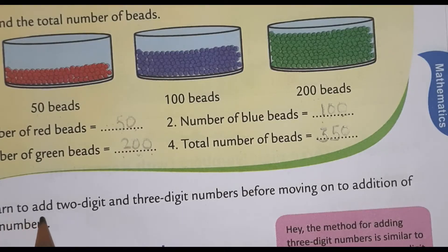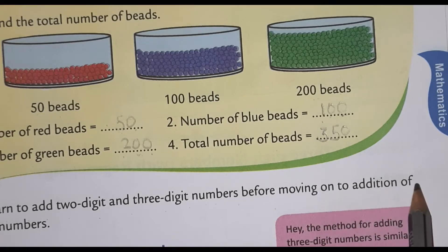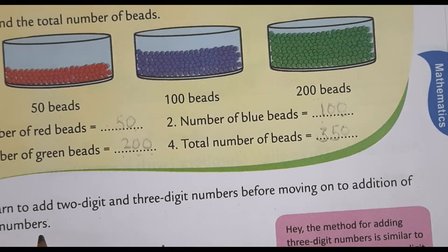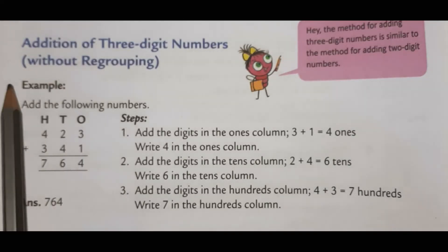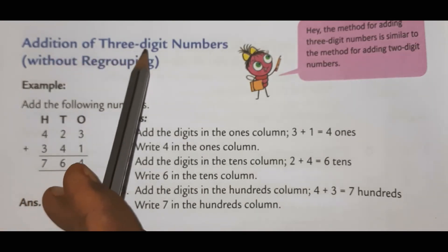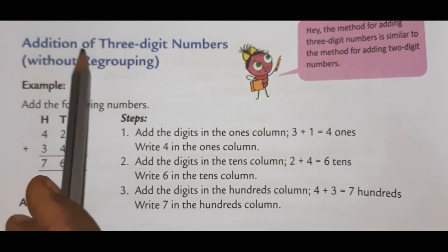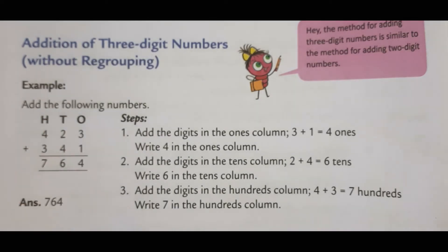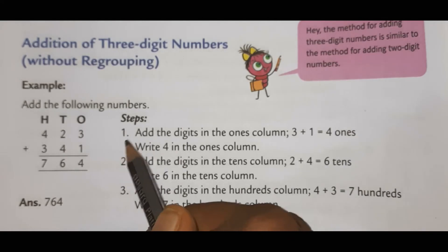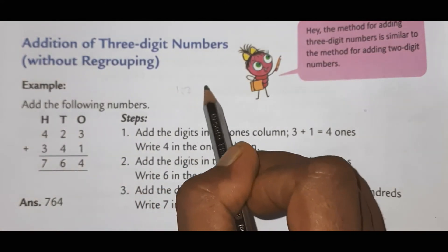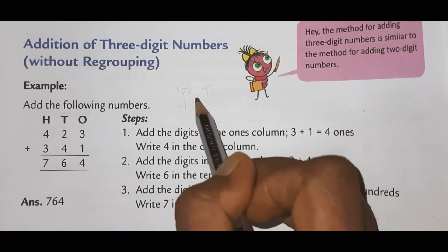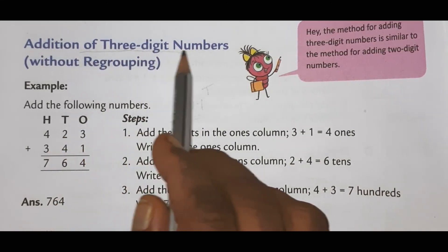We will learn to add 2-digit and 3-digit number before moving on addition of 4-digit numbers. So, my great three children, let's understand addition of 3-digit numbers. 3-digit means 100. That is the smallest 3-digit number. And after that, 101, 111, till 999. All are 3-digit numbers. From 100 to 999, all are 3-digit numbers.